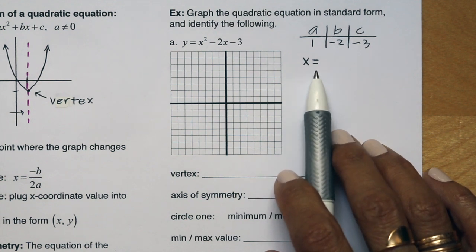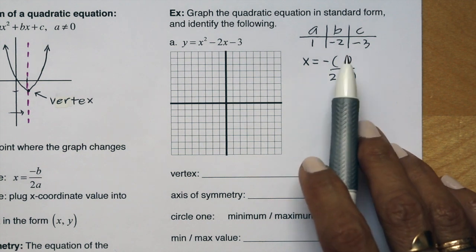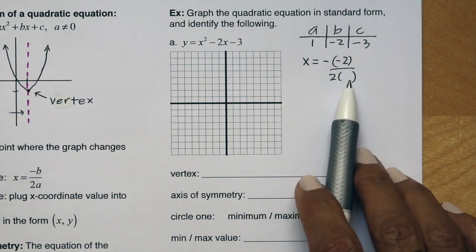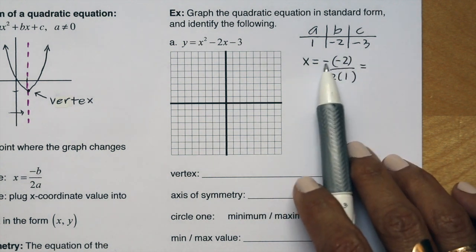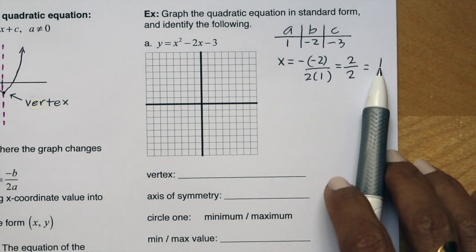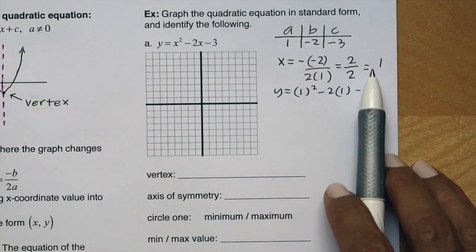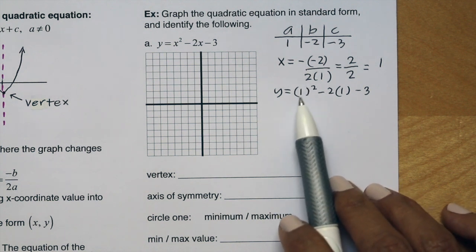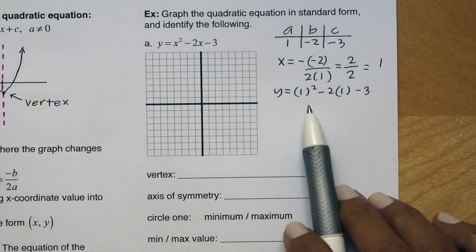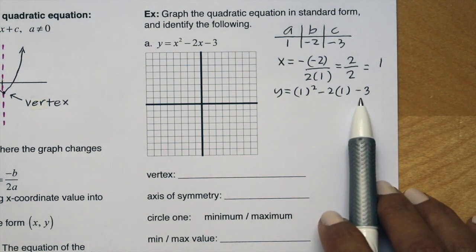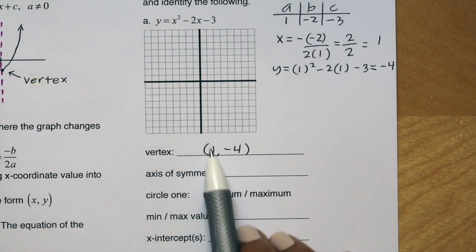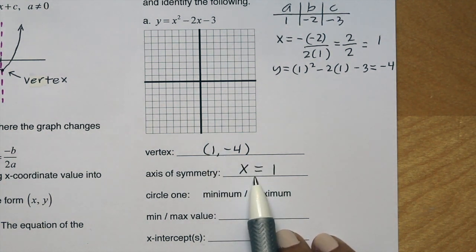To find the vertex, use x equals negative b over 2a. Plugging in, we get negative negative 2 over 2 times 1. A negative times a negative makes positive 2 on top, and 2 times 1 makes 2 in the denominator, giving x equals positive 1. Now plug 1 back in for all x's: 1 squared is 1, negative 2 times 1 is negative 2, plus negative 3. So 1 minus 2 is negative 1, and negative 1 plus negative 3 is negative 4. Our vertex is 1, negative 4. The axis of symmetry is x equals 1.